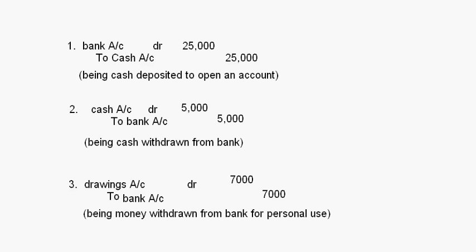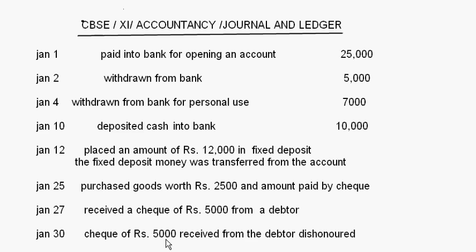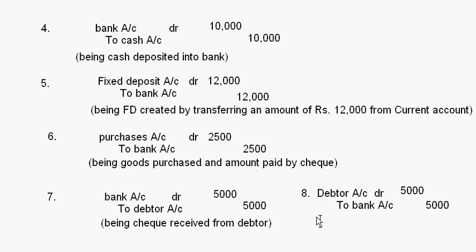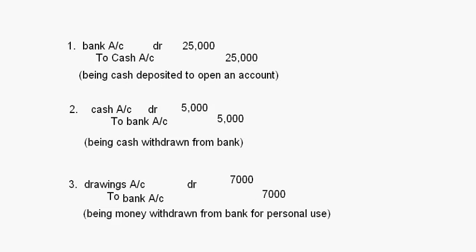The next one: check of rupees 5,000 received from the debtor dishonored. January 27th we had received the check and passed the entry bank account to debtor account. Now when the check is dishonored, you just pass a reverse entry: debtor account debit to bank account, the same amount 5,000 and 5,000, being check received from debtor dishonored. These are the journal entries we have passed for these transactions.